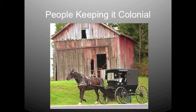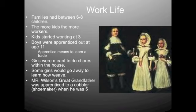Average work life for a colonial family was difficult — colonial life was not easy, and everybody worked hard. Families had between six and eight children, as many died in infancy; more kids meant more workers. Boys started working at age three, and girls as well. Boys were often apprenticed out at age 11 to learn a trade like making shoes, being a blacksmith, or being a tailor. Girls were meant to do household chores, and some went away to learn weaving. The speaker's own great-grandfather was apprenticed as a cobbler at age five in the late 19th century in the San Francisco Bay Area.